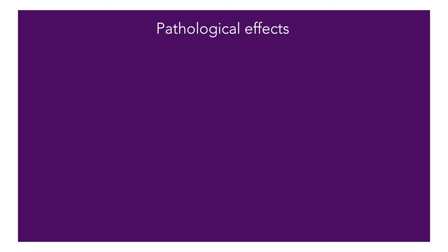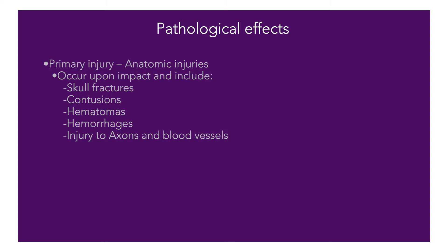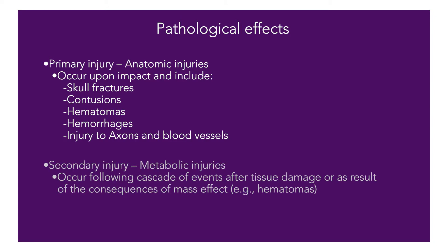The pathological effects of a traumatic brain injury are typically thought of as twofold. The primary injury, which includes anatomic injuries — these injuries are occurring on impact and include things like skull fractures, contusions, hematomas, hemorrhages, and injuries to axons and blood vessels. Secondary injuries, or metabolically related injuries, occur following this cascade of events that I discussed earlier, after tissue damage, or are the result of the consequence of some sort of mass effect.